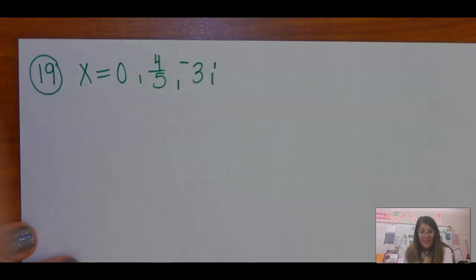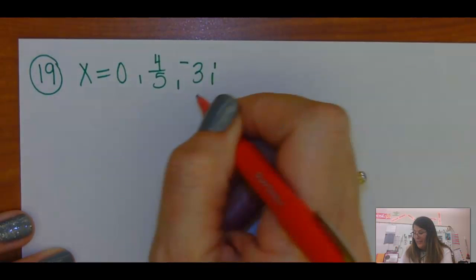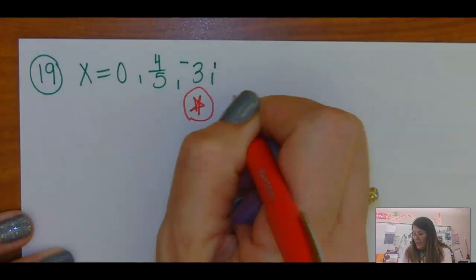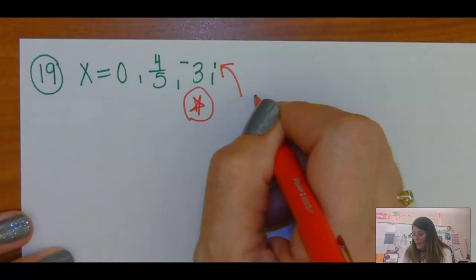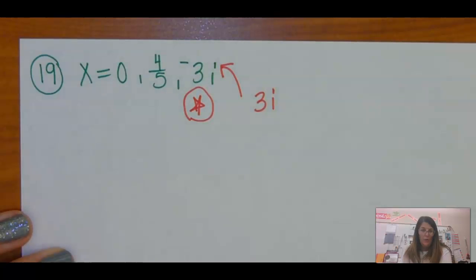Okay, if you are asked to write the equation where these are the roots, these are the zeros. First of all, I need you to realize whenever you have an imaginary or a radical, the opposite sign is also a root.